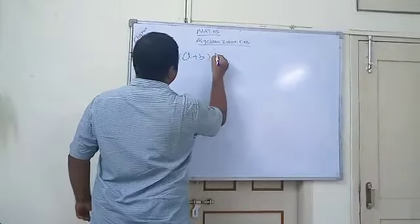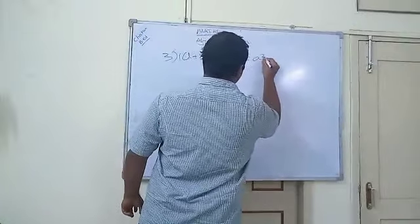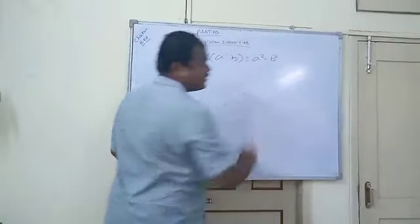A plus B into A minus B is equal to A square minus B square. It is also one of the algebraic identities.